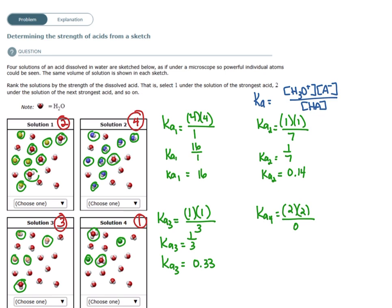So you want to remember that the larger the KA value, the stronger the acid. The smaller the KA value, the weaker the acid. Good luck and keep practicing.